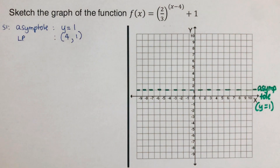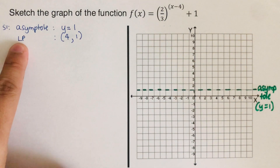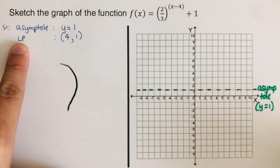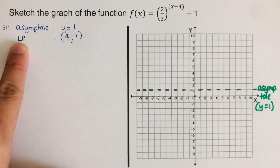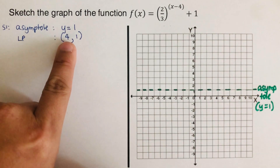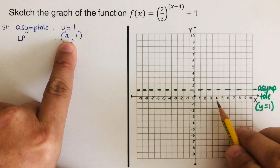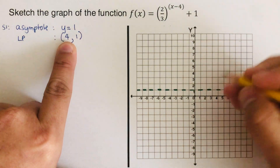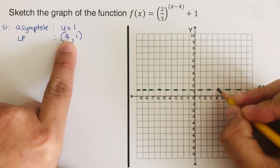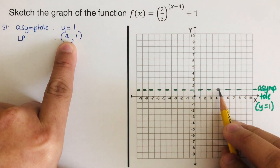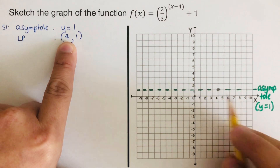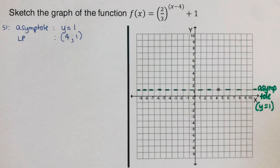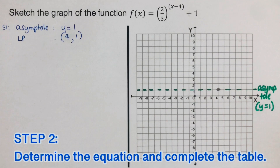We sketch the locator point at (4, 1) using pencil, since it is not part of the graph — it's just our starting point for going left, right, up, or down. After drawing the graph we'll erase it. The next step is to determine the working equation by covering h and k.